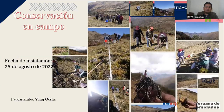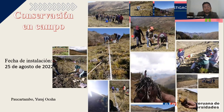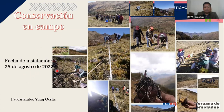El proyecto empezó el año 2019 con una colecta de papas nativas en toda la región Pasco. Pasco tiene tres provincias: la provincia de Pasco, la provincia de Daniel Alcides Carrión y la provincia de Oxapampa. Se logró colectar 350 variedades de papas nativas que actualmente la universidad está conservando. Este año hemos hecho la siembra del banco de germoplasma en campo definitivo el 25 de agosto, en la localidad de Paucartambo, en la zona Yuraj-Oqcha.